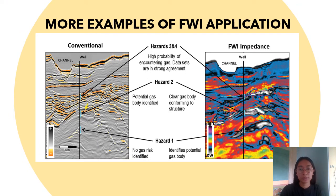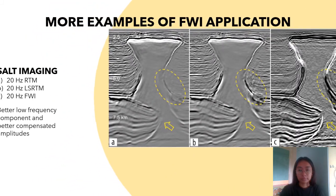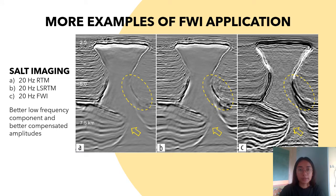Here are more examples of how FWI can improve subsurface imaging. This is a comparison between conventional impedance and FWI impedance results. The most obvious difference is in hazard 1, where in conventional impedance the gas risk was not identified, while in FWI impedance the gas body was clearly shown. Another comparison shows different methods imaging a salt body: Figure A uses 20 Hz reverse time migration, Figure B uses 20 Hz least square reverse time migration, and Figure C shows the FWI image. Figure C clearly shows a better and clearer image, especially at the steep dipping area of the salt body.